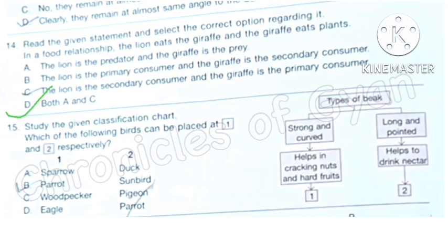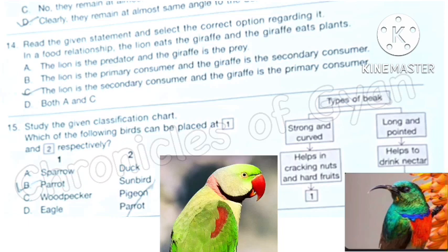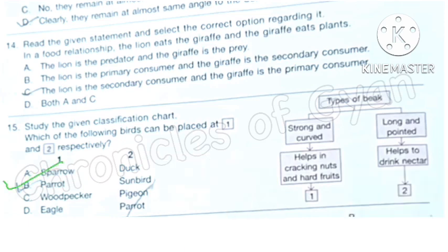Question 15: Study the given classification chart. Which of the following birds can be placed at 1 and 2 respectively? For one, the conditions are the types of beak should be strong and curved and helps in cracking nuts and hard fruits. For this condition the answer should be parrot. The second bird, that is number 2, the conditions are long and pointed beak and helps to drink nectar. This condition is satisfied by the bird sunbird. Correct answer is option B.